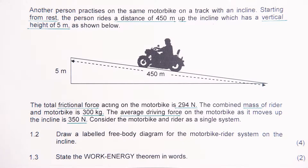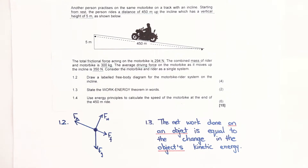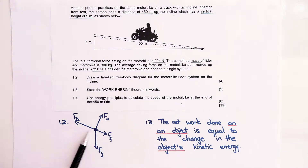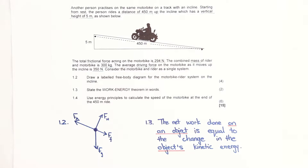You can pause the video and read through the question carefully to note all the important information. Question 1.2: draw a labelled free body diagram for the motorbike-rider system on the incline. The free body diagram includes: the weight of the motorbike acting downward, the applied force of the engine up the slope, the normal force perpendicular to the slope, and the frictional force down the slope because the motorbike is moving up. The question carries four marks — always an indication of how many forces there should be. Even if not asked, I advise drawing it to identify all forces and their directions.